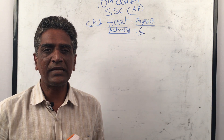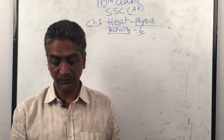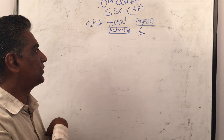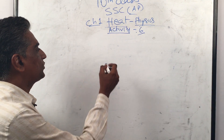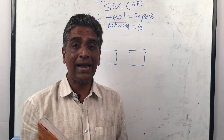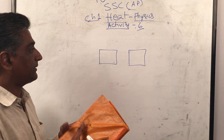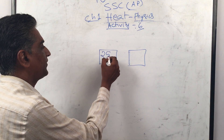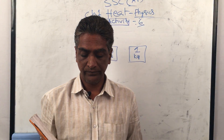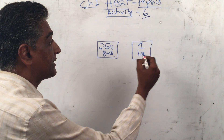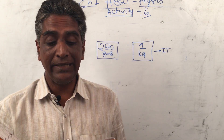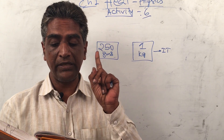This wonderful textbook has broken down the concept into beautiful parts. Take two beakers of equal volume. Take 250 grams of water in one beaker and 1 kg in another beaker. Note down the initial temperatures — they should be the same — using a thermometer.